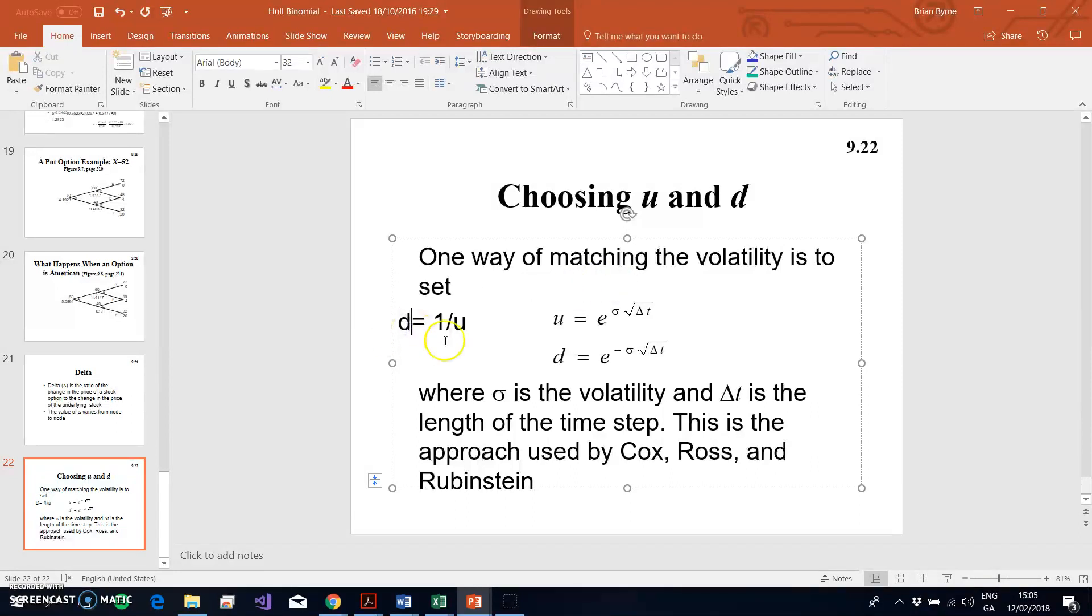d equal to 1 divided by u is consistent with what we have here, where u is the exponential, taking the power of the Black-Scholes volatility or standard deviation of the annualized return, multiplied by the square root of the duration of the time step. Then d is the same except a negative power.